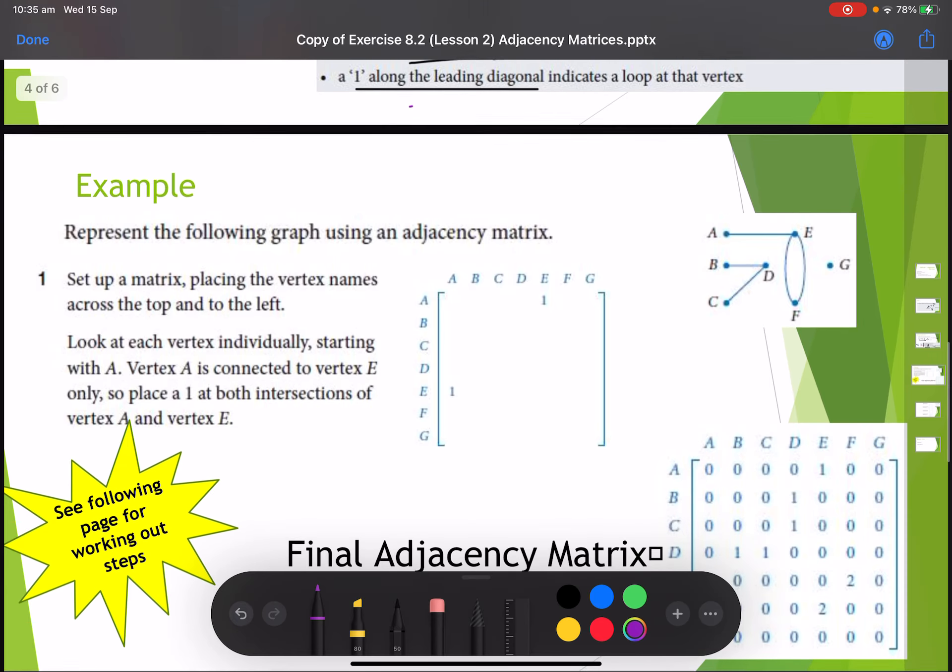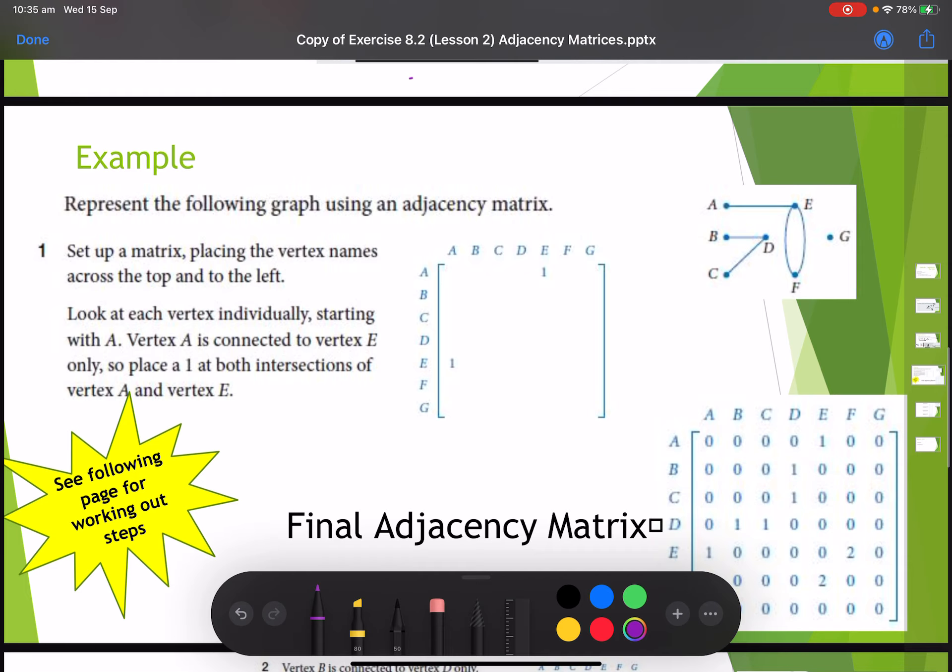An example question. We have this graph and want to convert it into an adjacency matrix. An adjacency matrix is just showing the number of pathways to go from each vertex. Step one is we set up our matrix. So here I've got vertice a, vertice b, vertice c, vertice d, vertice e, vertice f, and vertice g.